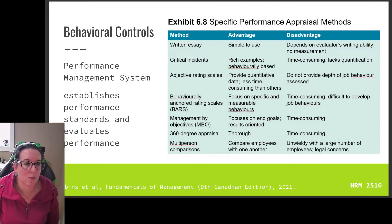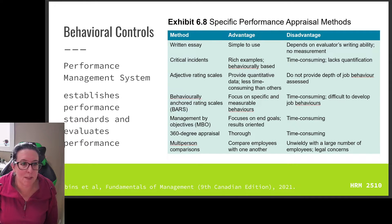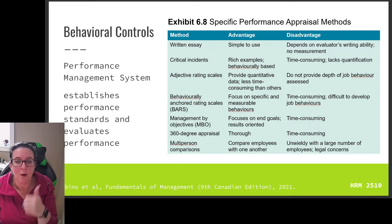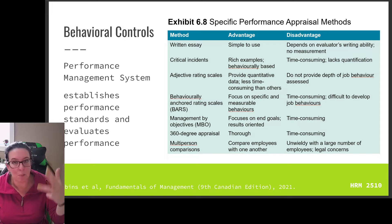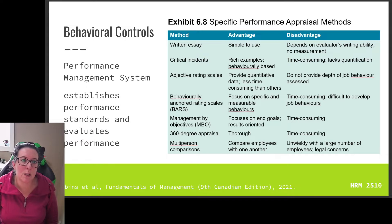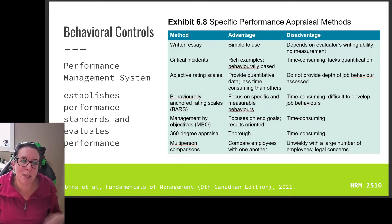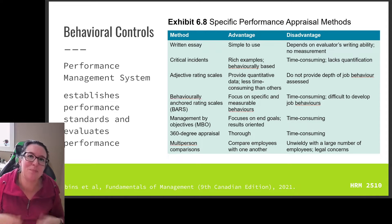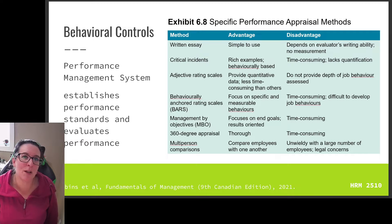We wrap up the last of our three videos on the five parts of human resource management by looking at performance management systems. The five aspects are recruiting, training and development, benefits and compensation, employee relations including labor unions, and finally performance management. Here we're looking at behavioral controls, as opposed to the financial controls we looked at previously — ensuring we have the appropriate behaviors for the organization to operate.